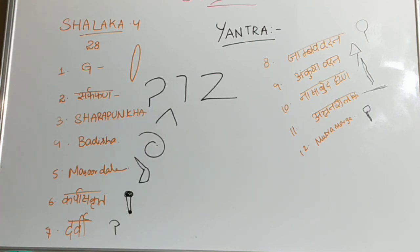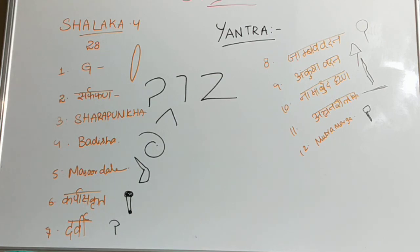With this, we have completed the 28 types of Shalaka Yantra, along with the diagrams. Hope you all got clarity regarding the types of Shalaka Yantra and Yantra also. In the next videos, we will plan Upayantra, and later on we will see more topics regarding Ayurveda, including clinical aspects. So like our video, subscribe to our channel, share to your friends and juniors. Thank you.